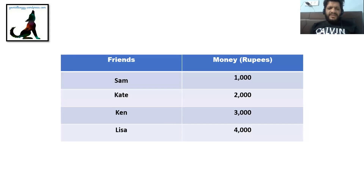Suppose you have four friends — Sam, Kate, Ken, and Lisa — and they have certain amounts of money: 1,000 rupees, 2,000 rupees, 3,000 rupees, and 4,000 rupees. This is very basic data that requires reading a lot to understand the scenario. Suppose these four people are contributing to a cause and these are the amounts they paid. To get an idea of the contributions in comparative terms, reading the whole table and analyzing it involves a lot of effort. Humans prefer knowing things in a concise way — that's what infographics do.